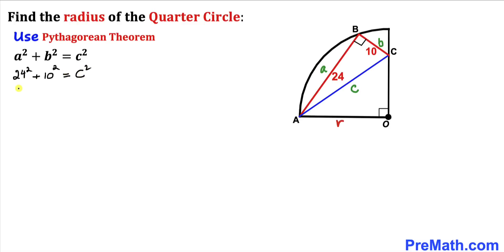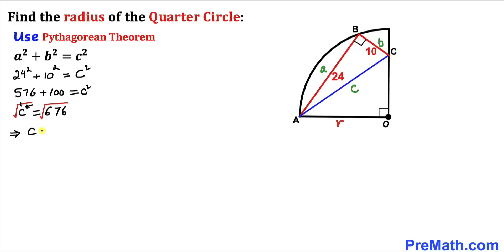Simplifying: 24² is 576, plus 10² is 100, equals c². So c² = 676. Taking the square root of both sides, c = √676 = 26. Therefore, side length AC turns out to be 26 units.